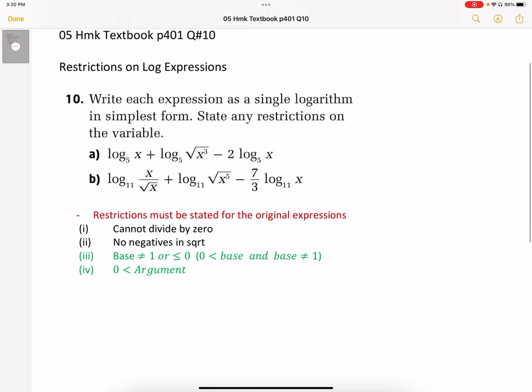We need to remember some of our old restrictions. We can't divide by zero, no negatives in the square root, and we also have the log restrictions. When the base is not equal to zero or less than or equal to zero, we can't have that. Or in other words, the base must be bigger than zero, must be positive, and it can't be one. The other log restriction is to do with the argument. The argument must be positive. It can't be zero, it has to be positive.